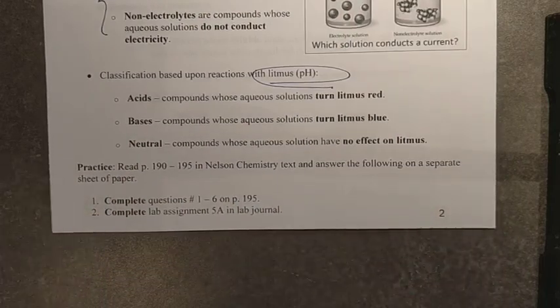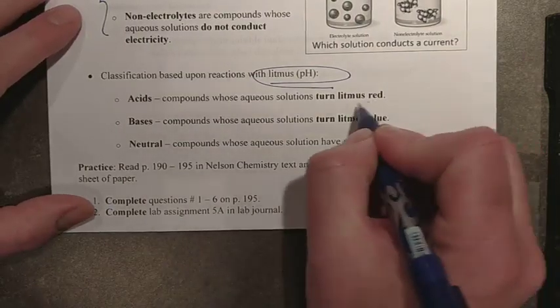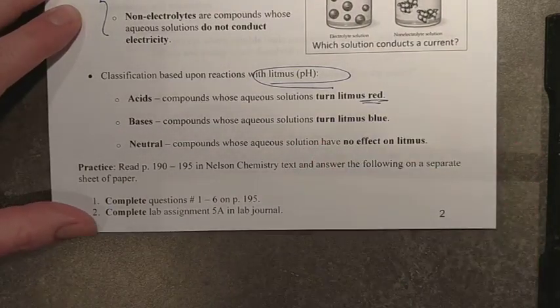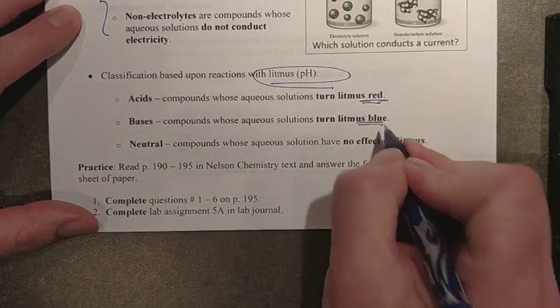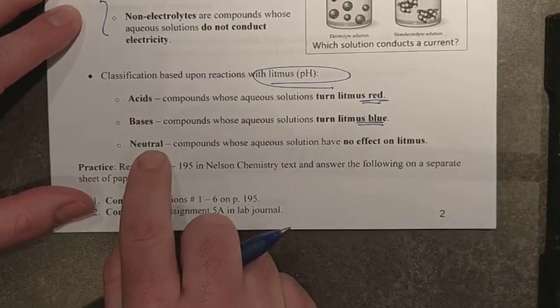So remember, acids would test litmus as red, bases would test it as blue, and neutral compounds, such as my ionic salts, and my dissolved molecules generally have no effect on litmus.